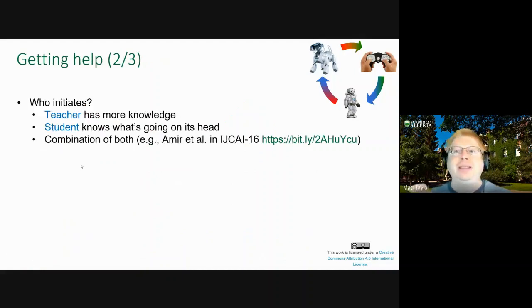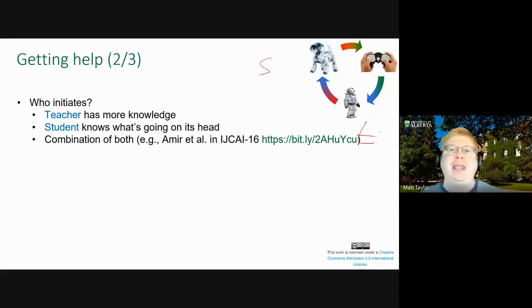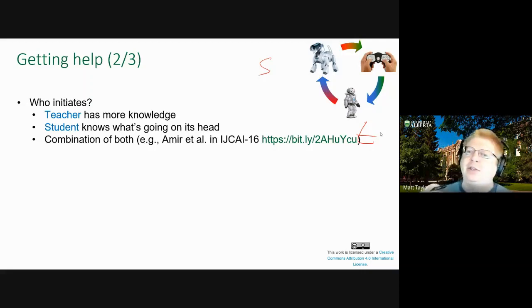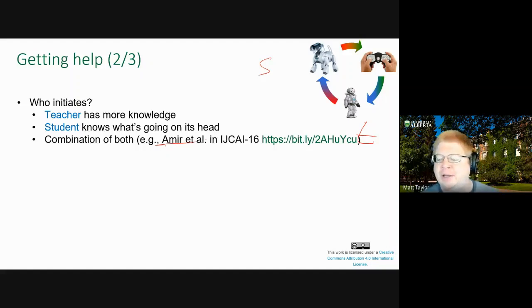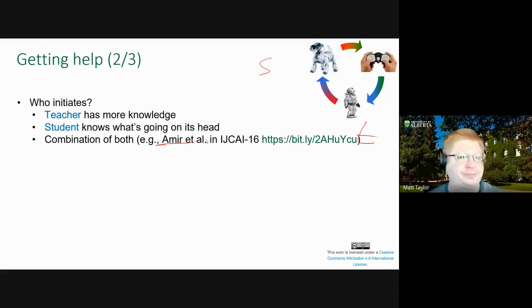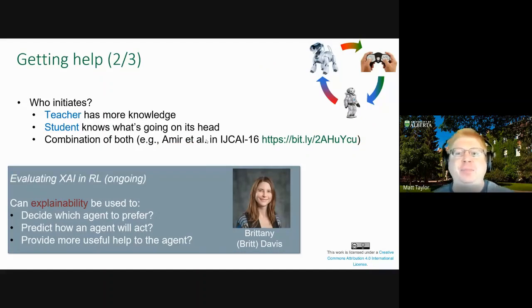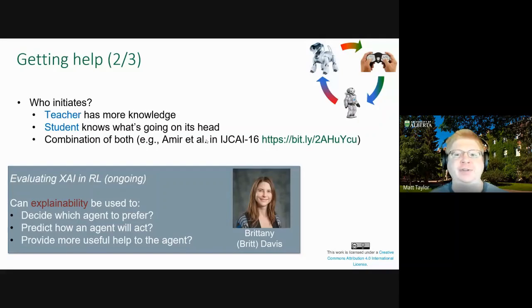When we think about getting help, we have a novice student agent and a more knowledgeable teacher. When should there be help? The teacher might say, 'student, you're getting close to the cliff, stay away.' On the other hand, the student knows what's going on in its own head, so maybe it needs to say, 'I really don't know what to do here, teacher, can you help me?' There's a nice paper from Ofra Amir and Microsoft looking at how you could combine both — where a student could ask for help and a teacher could provide help. You could also think about how explainability could be useful — if the teacher knew what was going on in the student agent's head, it could provide better advice.